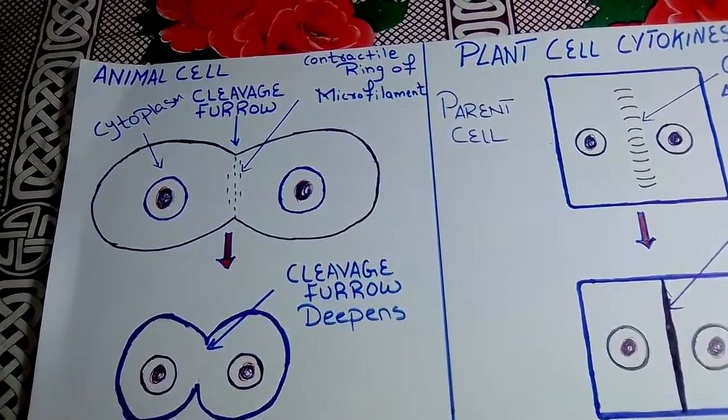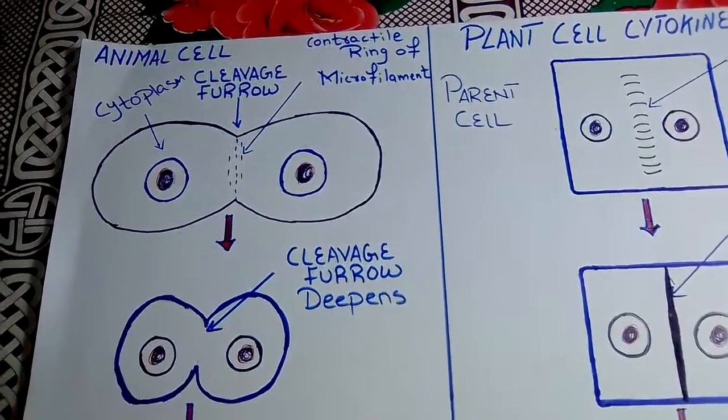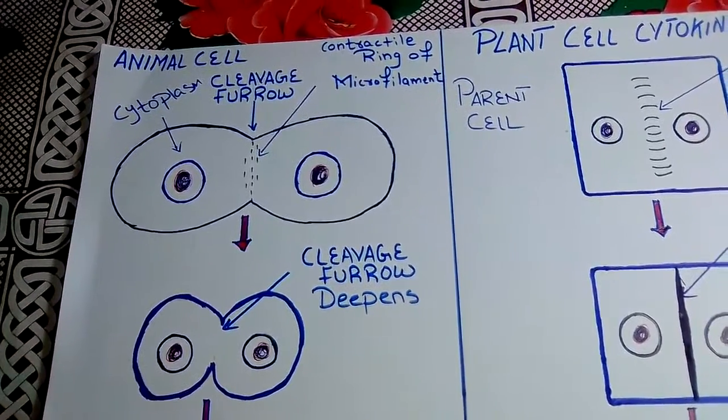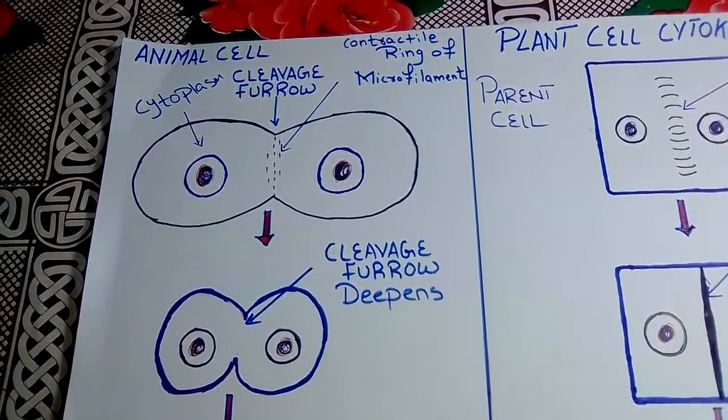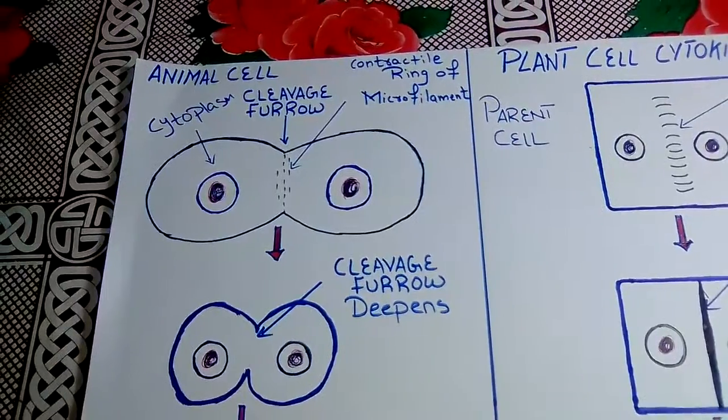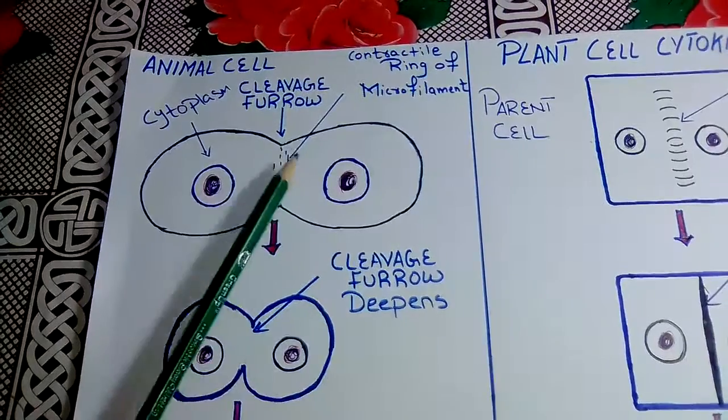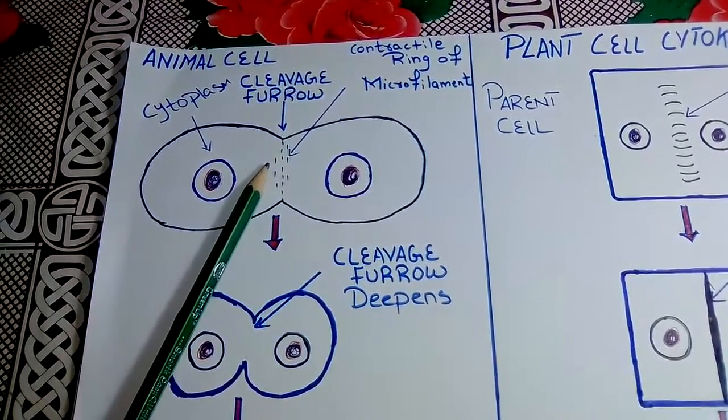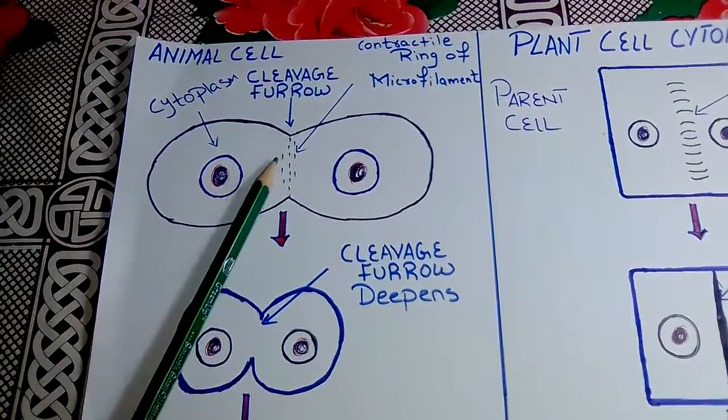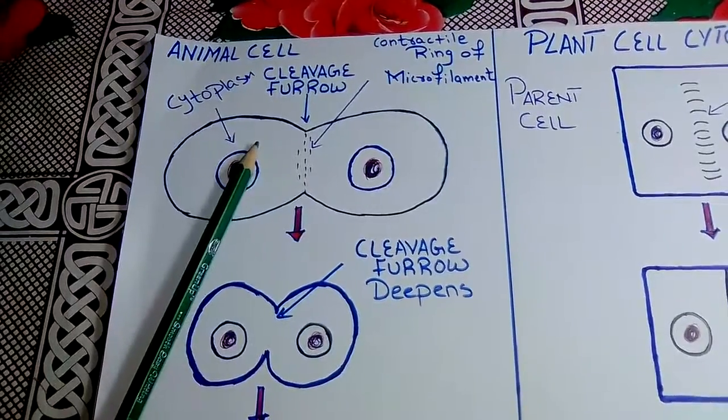First of all, I'm going to define what is cytokinesis. Basically, cytokinesis is a division of cytoplasm. As you can see in this diagram, the parent cell is going through cytokinesis, and at the end of cytokinesis, the cytoplasm will be divided.